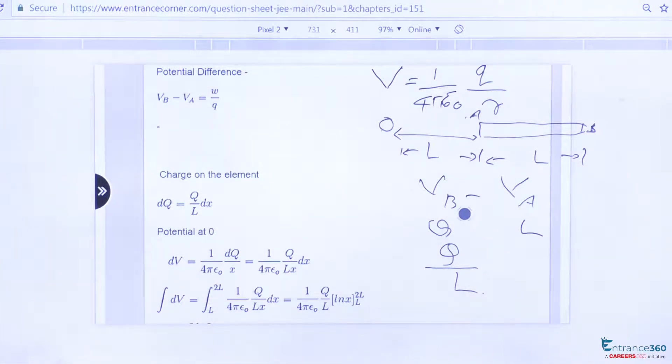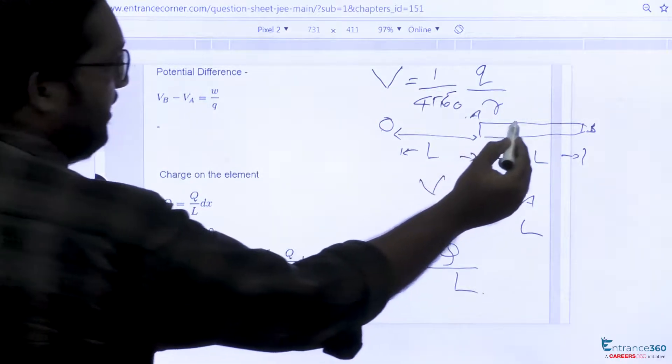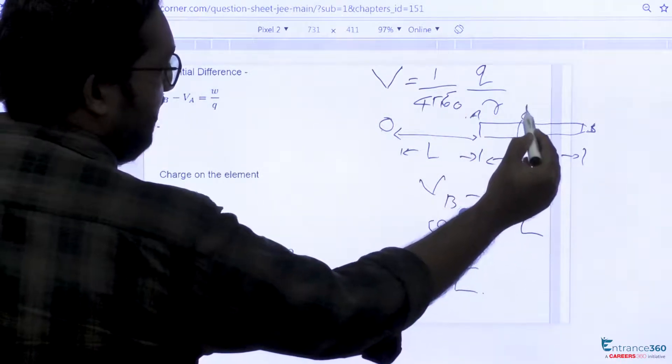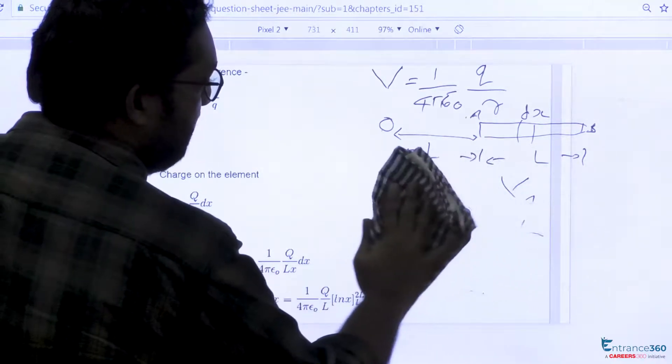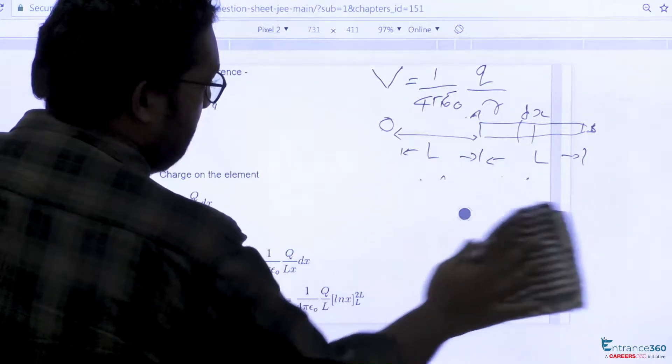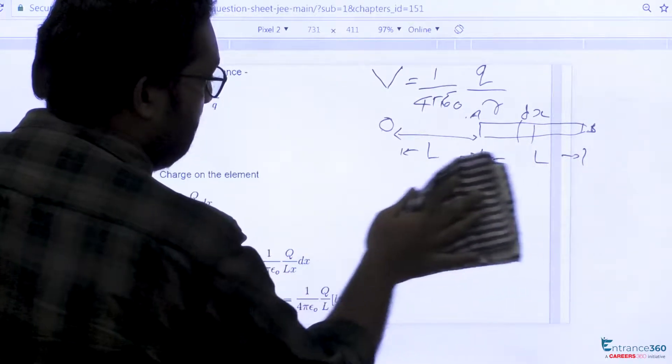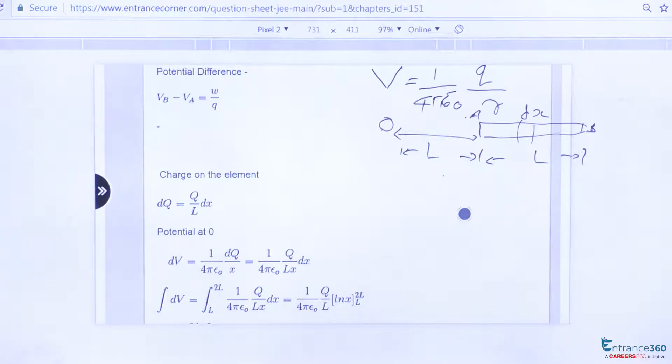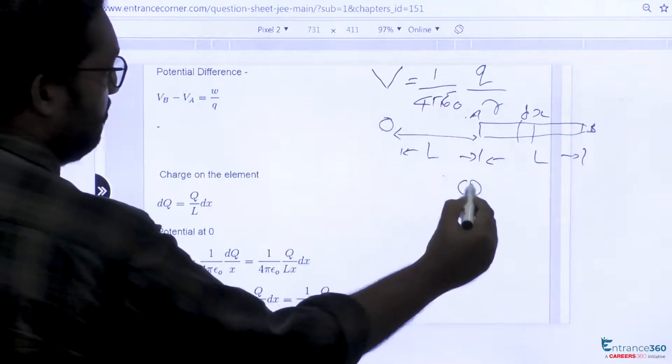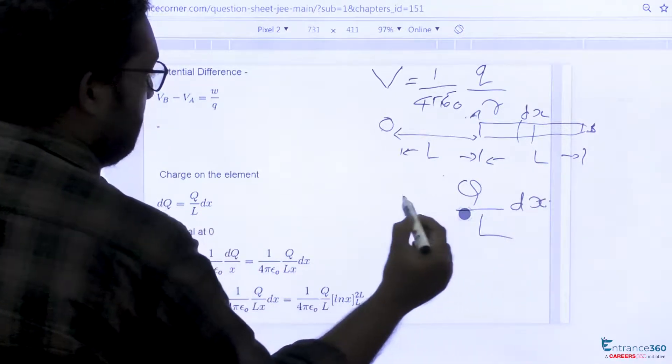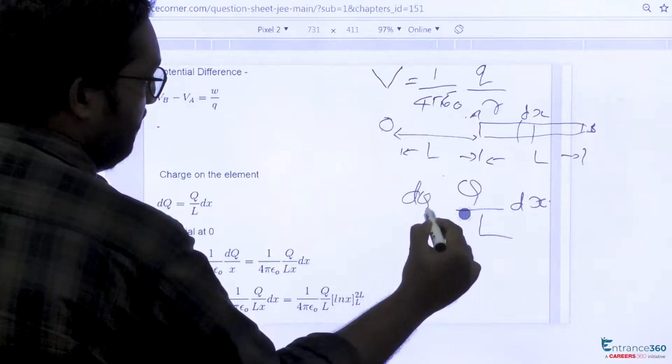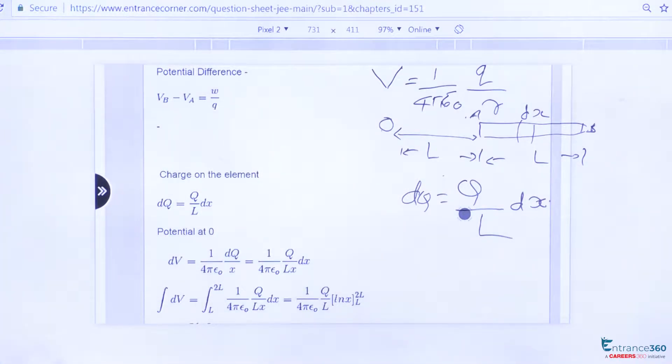So let's take a small length, say dx of the rod. So charge due to that small length will be our charge per unit length which is equal to Q by L into that small part dx. This is our charge of dx.